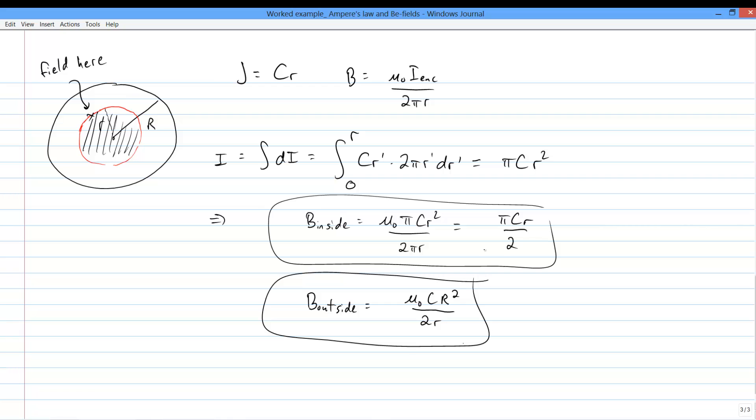So that's our B inside. It's qualitatively different from the B outside equation, being linear in r instead of depending on 1 over r.